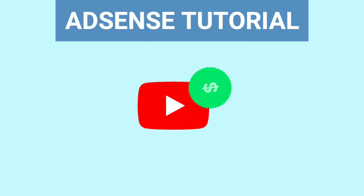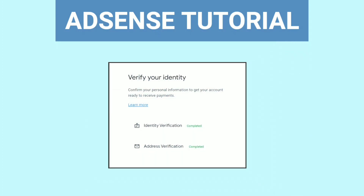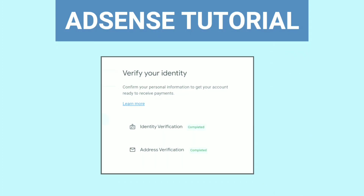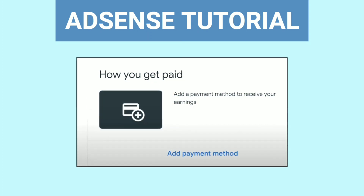Once your YouTube channel gets monetized, you link your AdSense account. And once you have made $10, you verify your identity and address on your Google AdSense account. Then the next step is to add a payment method or bank account to your Google AdSense account so that you can start receiving money. If you don't know how to do that, this video will be very helpful for you. Make sure you watch all the way to the end.